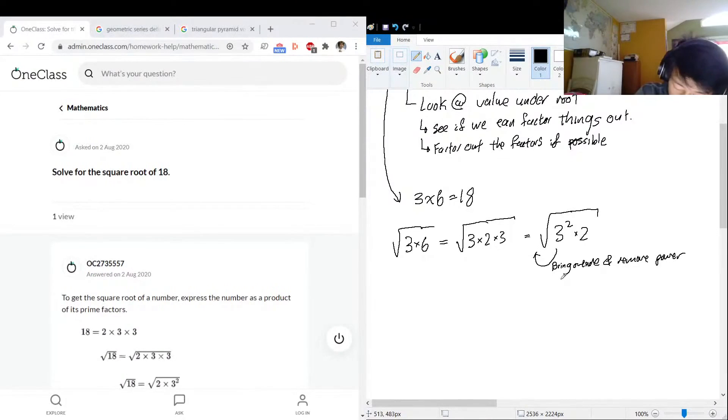So, this will be equal to: the square root of 18 is equal to 3 times the square root of 2. So, we brought the 3 out. The 3 was brought out like this and it lost its power. And everything left in the root is a prime number, so we can leave it that way.